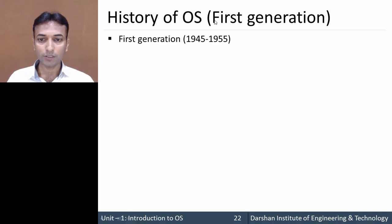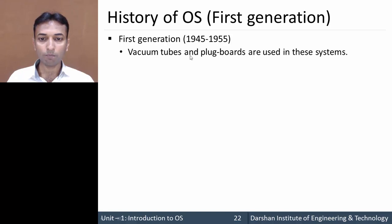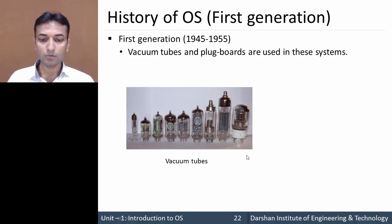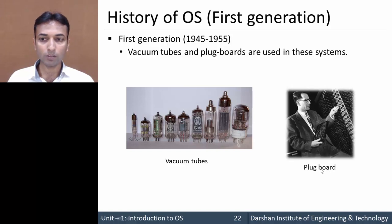First generation, that is from 1945 to 1955. In this generation, vacuum tubes and plug boards were used to develop computer systems. This is the photo of vacuum tubes that were used during the first generation, and this is the photo of the plug board used during first generation to develop computers.